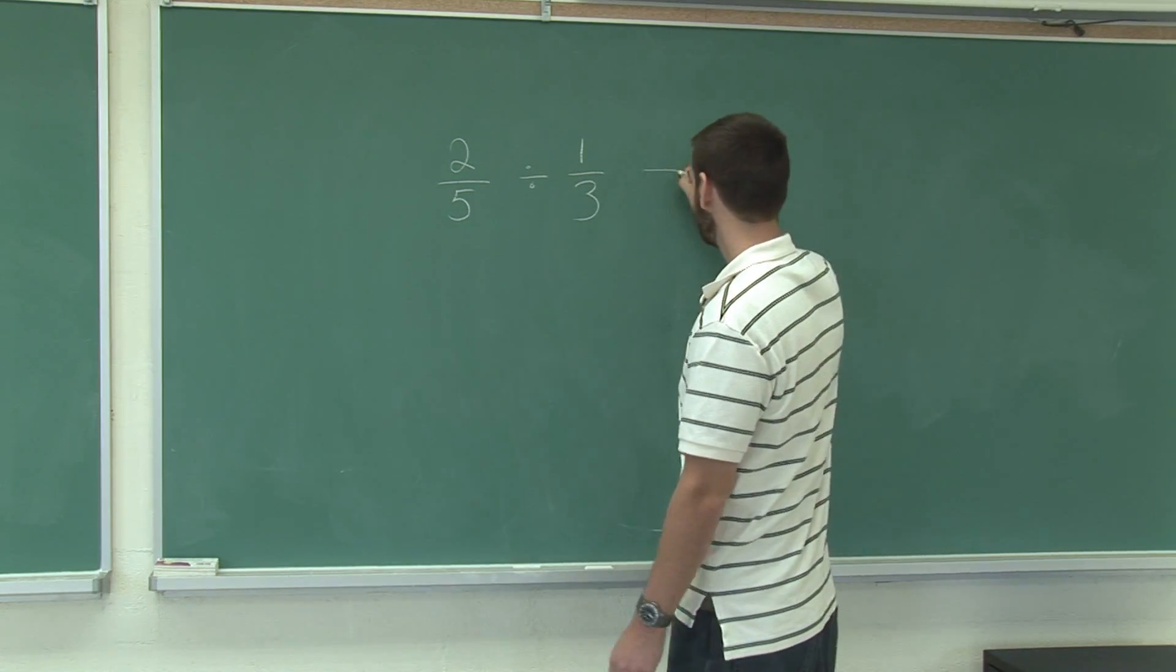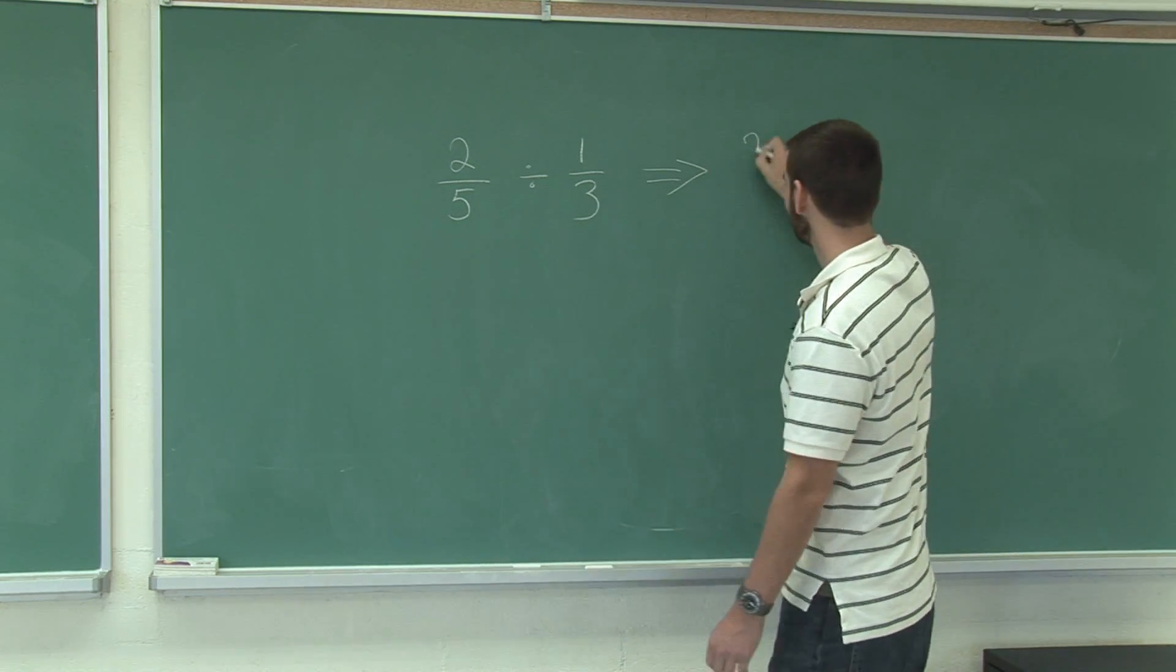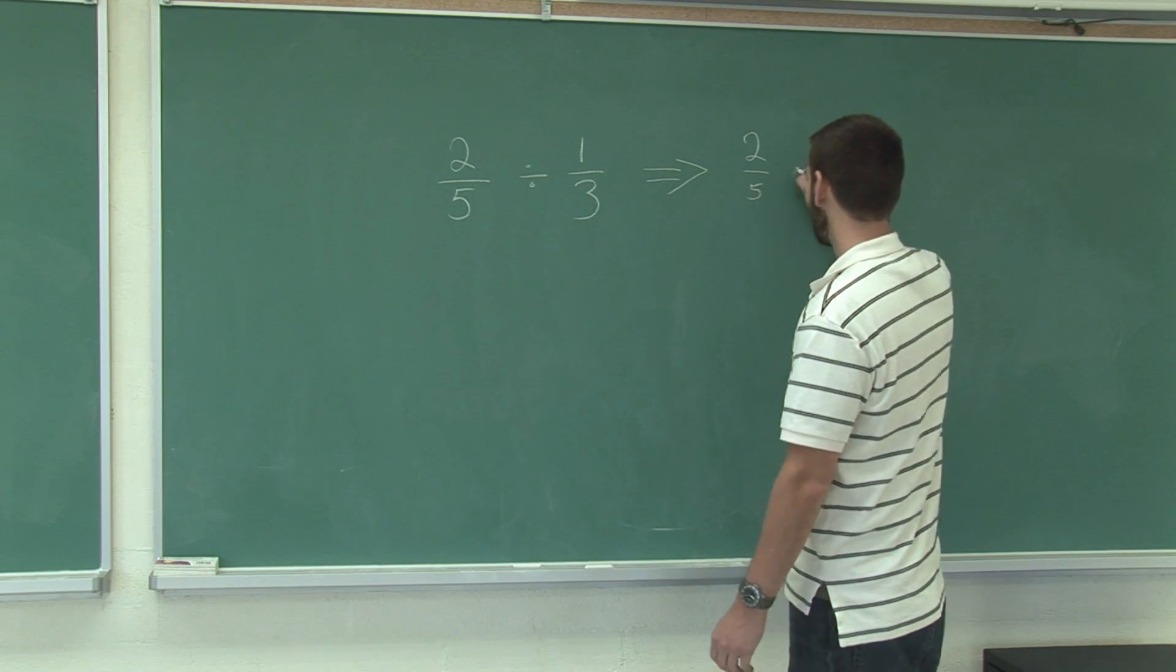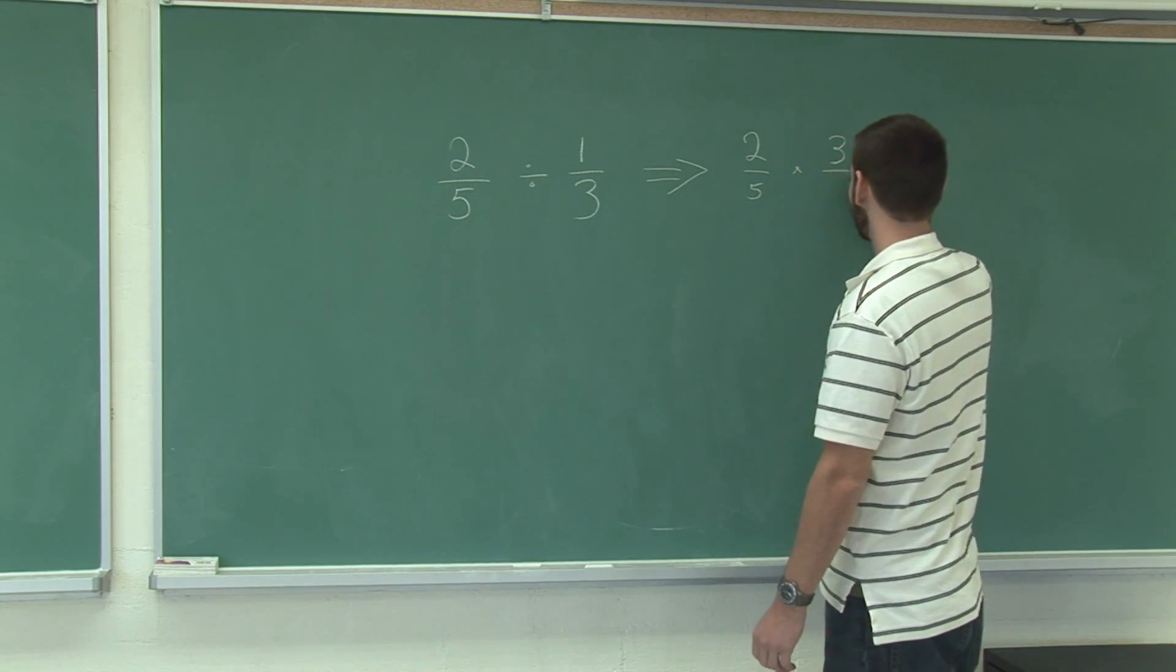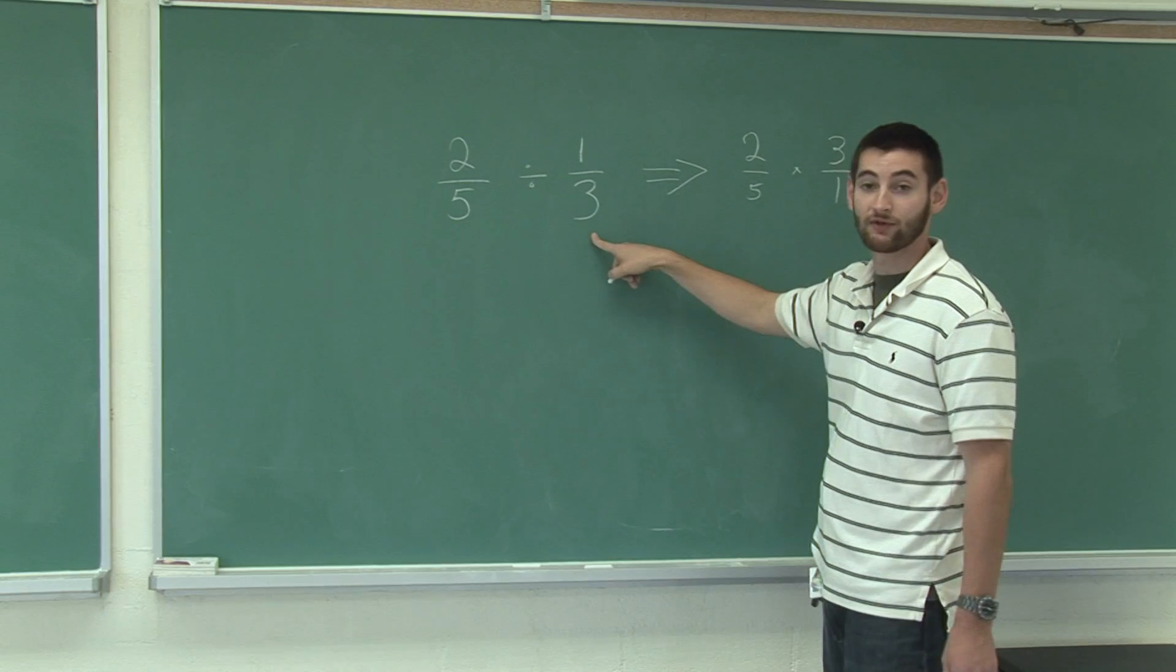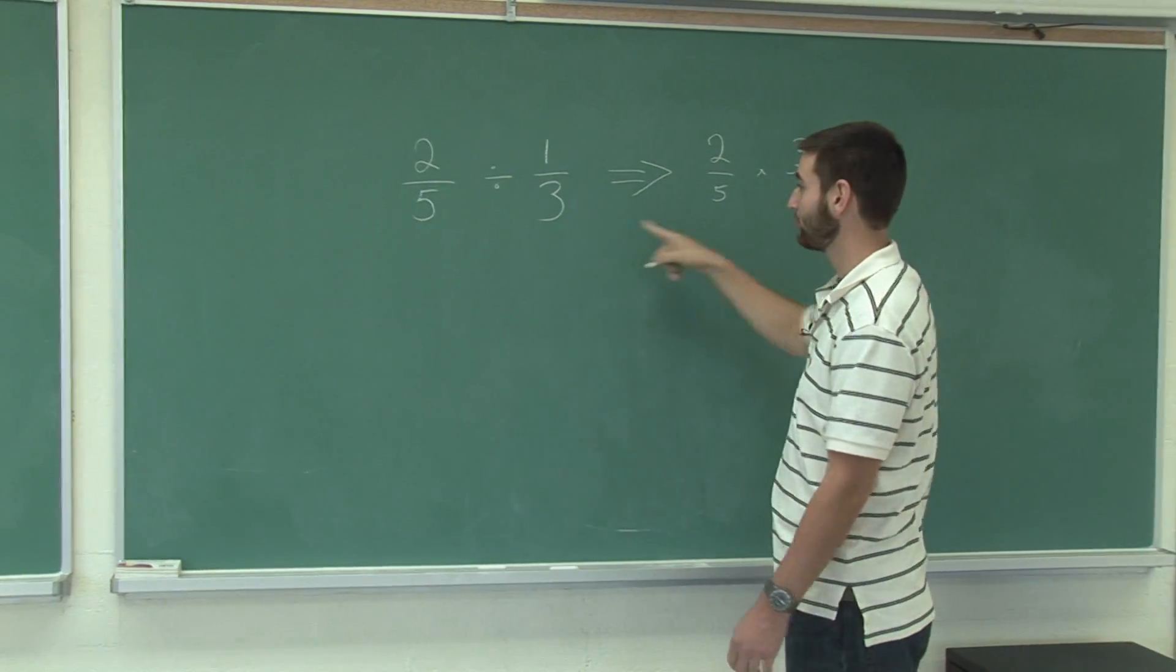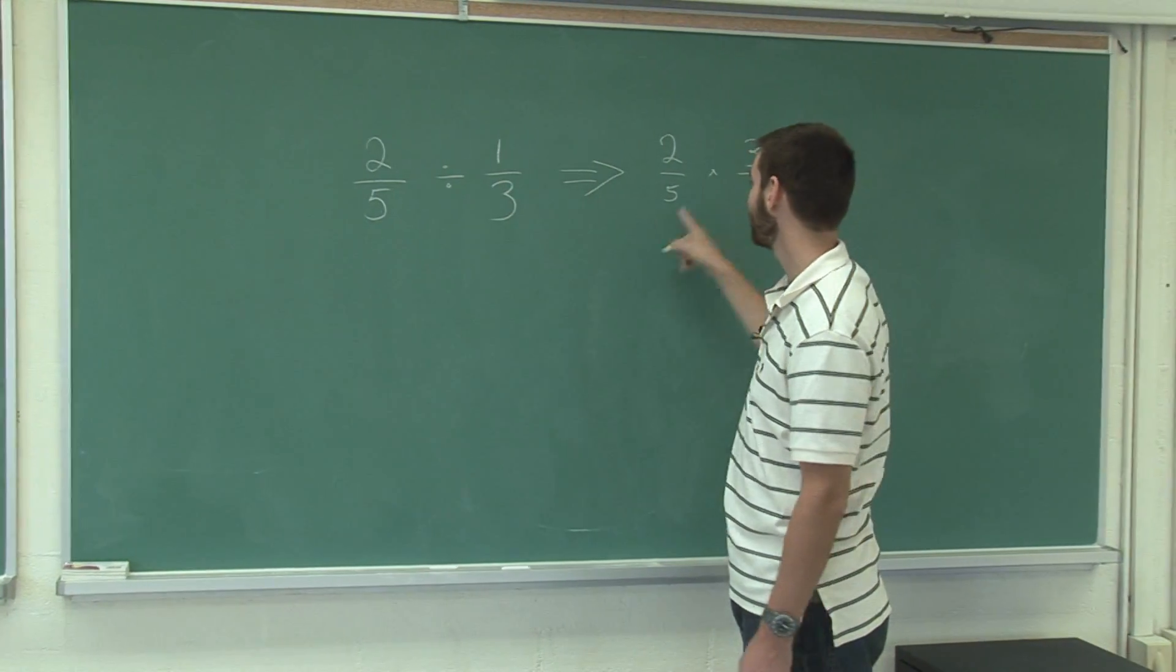So, this problem will transform to two-fifths times three over one, which is the reciprocal of one-third. Because when you take the reciprocal, you're exchanging division for multiplication.